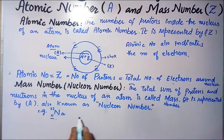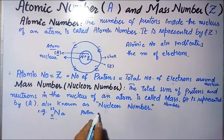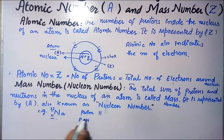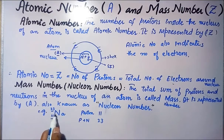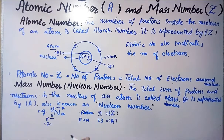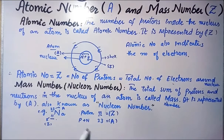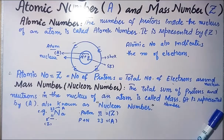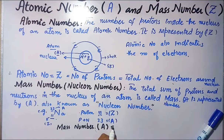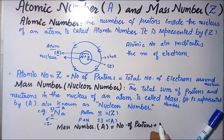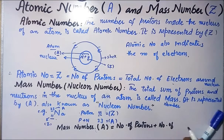For example, sodium has a number of protons equal to 11, and its mass number — which is proton plus neutron — is 23. Now we have to find the number of neutrons. The formula for mass number is: A is equal to Z plus N, where A is the number of protons plus the number of neutrons.